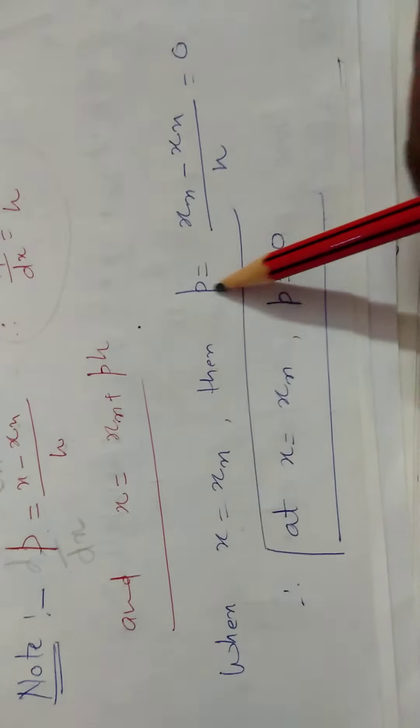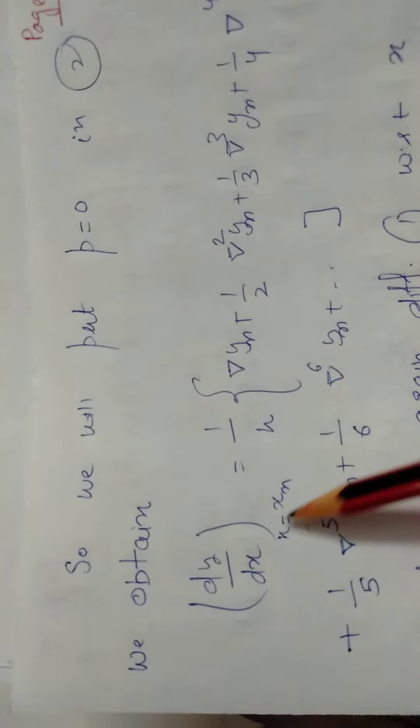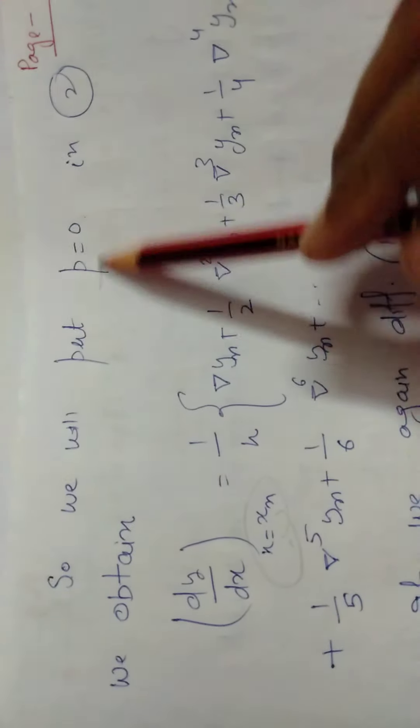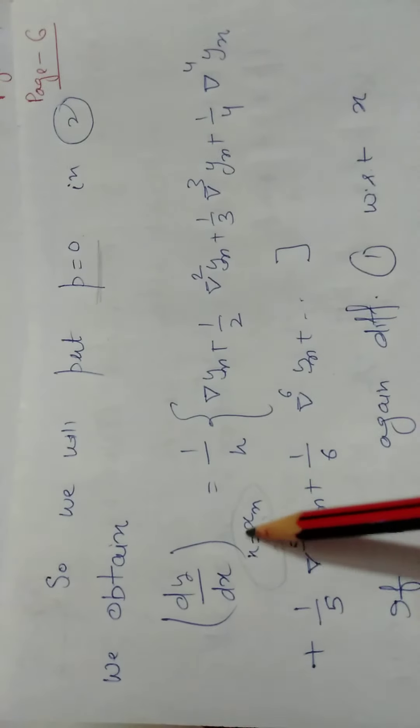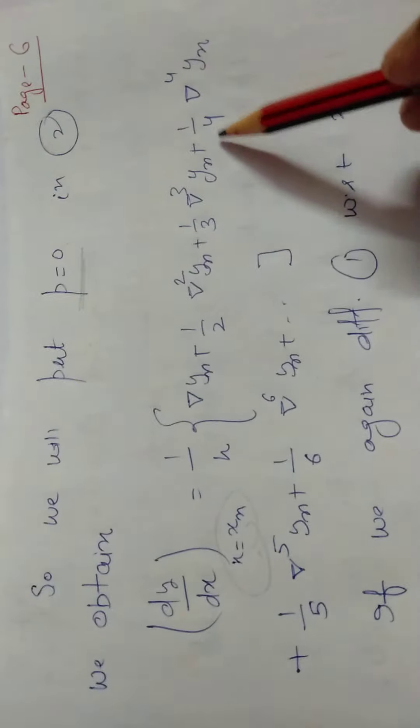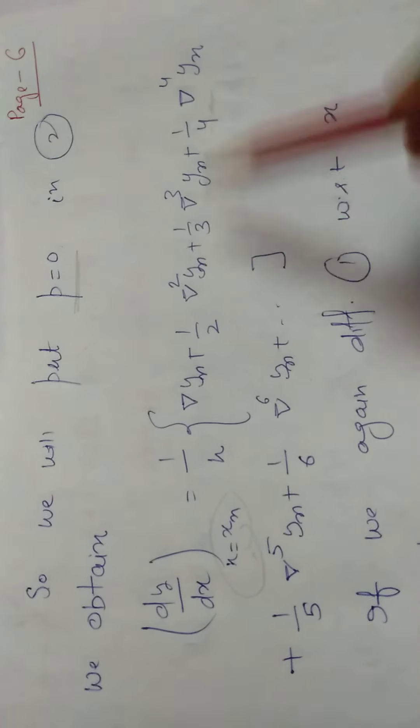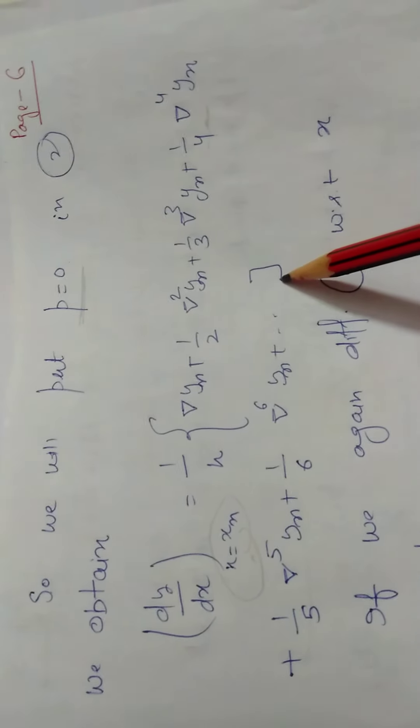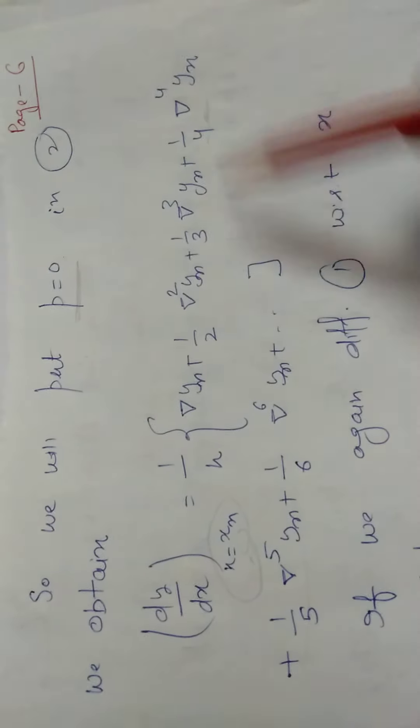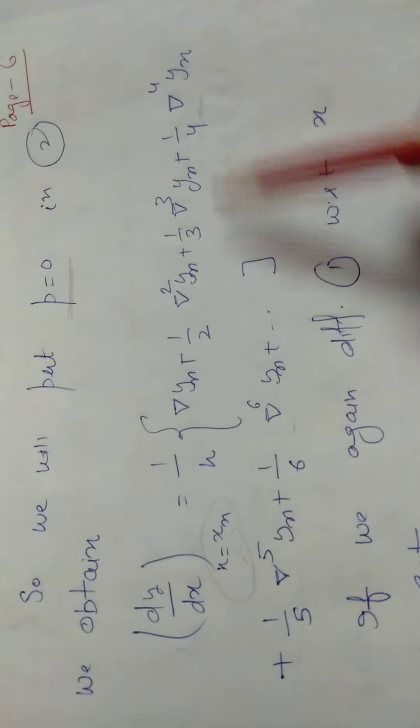So when x equals xn, p equals zero. This means when we want derivative value at this point, we substitute p as zero. Put p as zero. We have written terms up to fourth order in the formula. Similarly, the forward terms are also generalized, where generalization is easy. This is simply generalized.